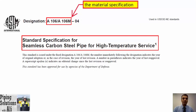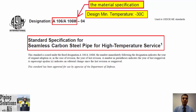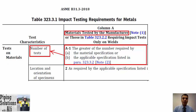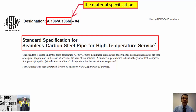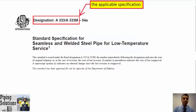Let's continue with an example. Assume we have ASTM A106 with a design minimum temperature equal to minus 30 degrees Celsius. Referring to previous sessions, this material shall be impact tested. If the material is tested by the manufacturer, box A1 of table 323.3.1 shall be followed for the number of tests on material. First, we shall check the impact test requirements in A106 — there is no requirement for impact testing in that material specification, therefore the applicable specification will determine the number of tests.